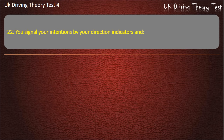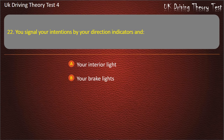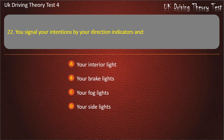Question 22. You signal your intentions by your direction indicators and: your interior light; your brake lights; your fog lights; or your side lights. Answer: Your brake lights.